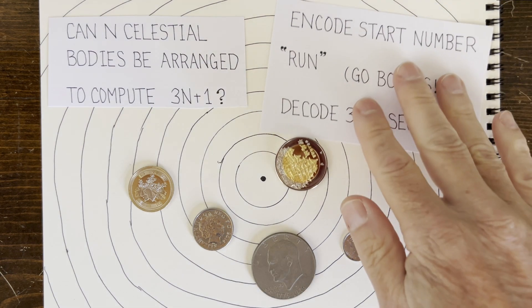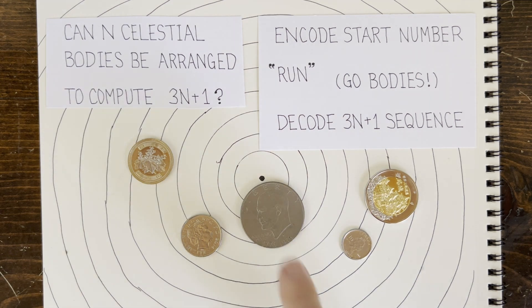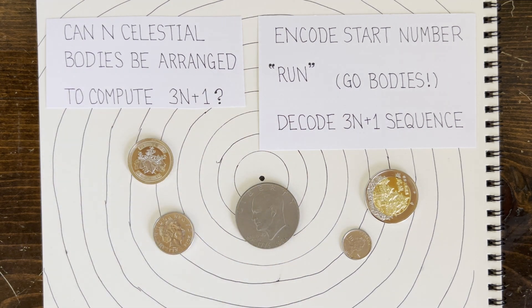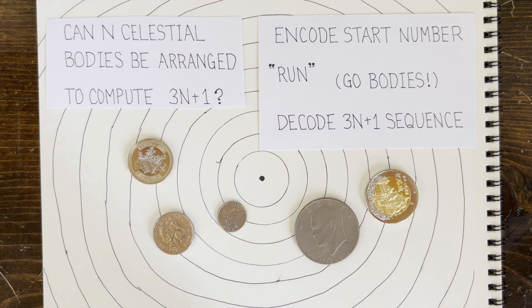We encode the 3n plus 1 start number as a set of bodies in space with initial positions and velocities. Then we'd watch the bodies move around and read off the start number's 3n plus 1 trajectory from the literal trajectories of the n bodies.